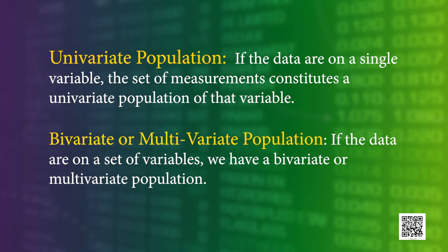If the data are on a single variable, the set of measurements constitutes a univariate population of that variable. Otherwise, we may have a bivariate population of heights and weights of all individuals in a region, or a multivariate population of expenditures on various items of consumption of all households.